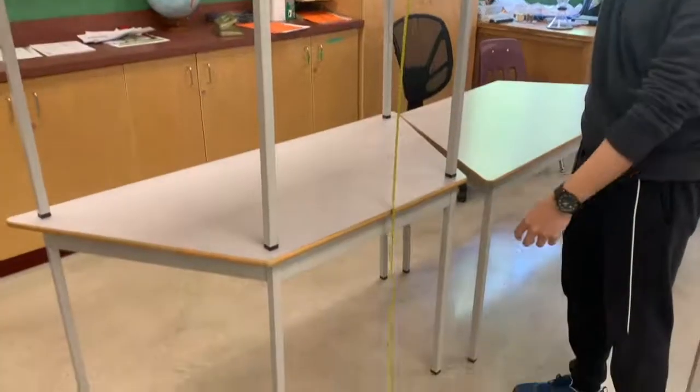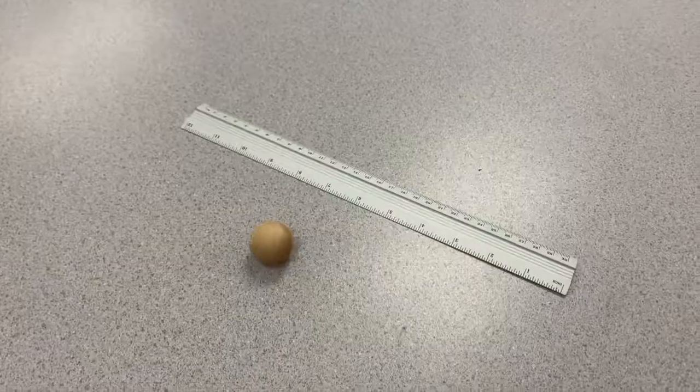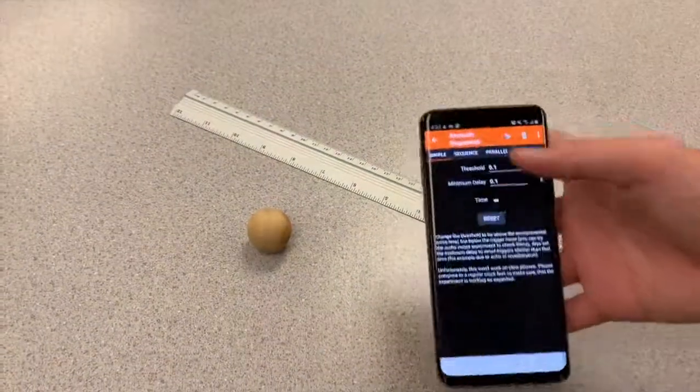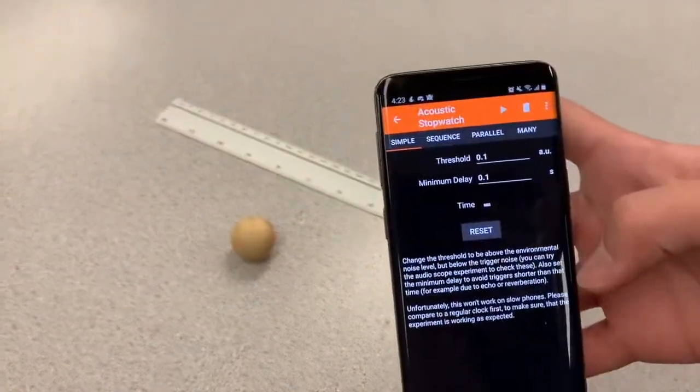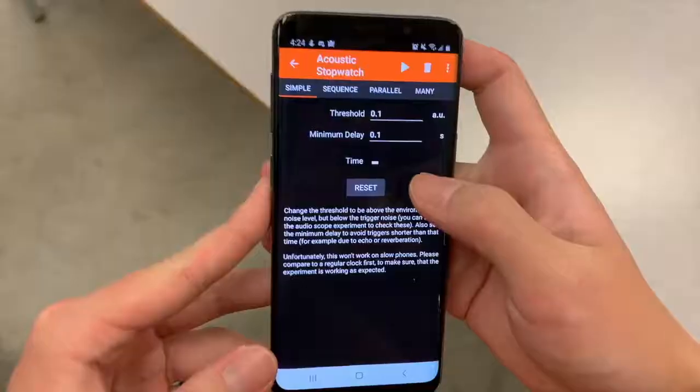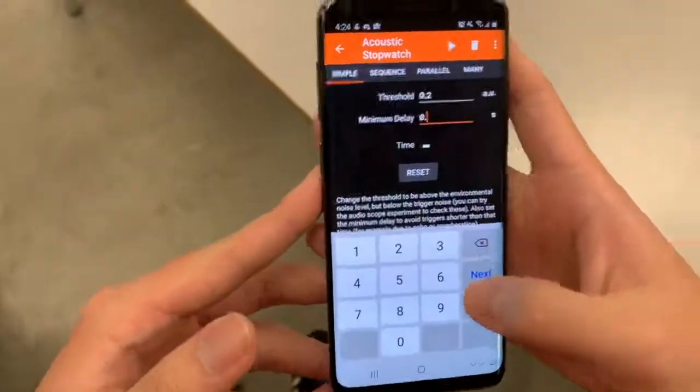In this experiment, we use the tape to measure the distance traveled by the object. Acoustic stopwatch in PhyPhox is used to record the falling time. In order to fully receive the sound, the threshold is set as 0.2 AU, and the minimum delay as 0.3 seconds.